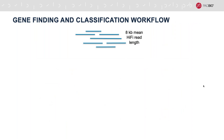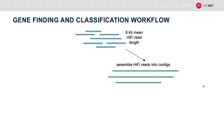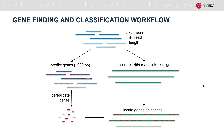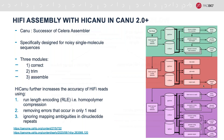The HiFi read length distribution shows a mode around 8 KB, ranging from below 2.5 KB up to 20 KB. While our minimum cutoff was Q10, most reads were in excess of Q30 accuracy — very highly accurate data. Our analysis steps were: assemble HiFi reads with Canu to generate contigs, predict genes on the original reads (typically multiple genes per read given the ~8–10 KB read length and ~900 bp to 1 KB gene length), dereplicate the predicted genes, and localize those genes on the assembled contigs.